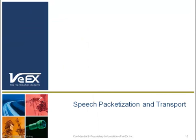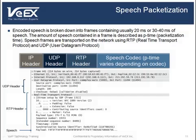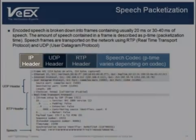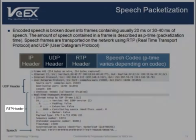We will now look at how speech is packetized and transported. As this graph shows, the continuous digitized speech is broken down into frames containing a certain speech duration, usually 20 ms or 30 to 40 ms. The amount of speech contained in a frame is described as the packetization time, or P time. The speech frames are then encapsulated to be transmitted on the network through Real-time Transport Protocol, or RTP, and User Datagram Protocol, or UDP. The picture here shows the details from a packet capture protocol decode, including the IP header, UDP header, and RTP header.